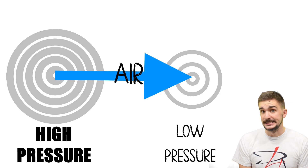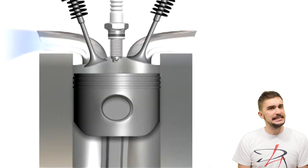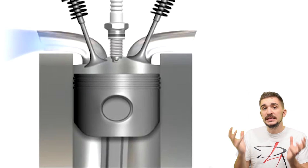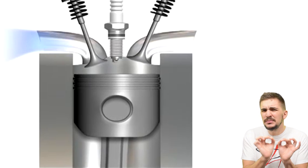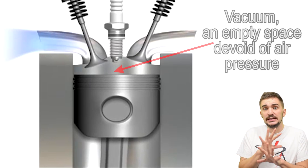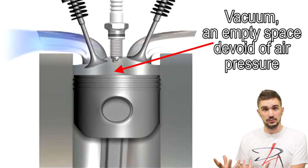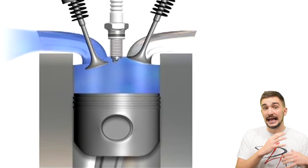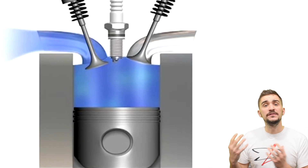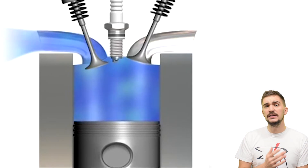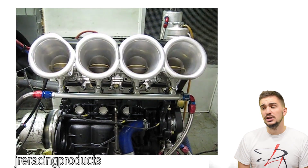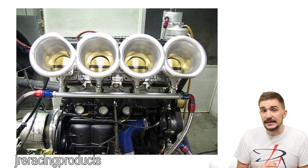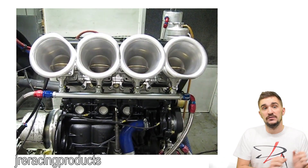Do you know what else works on a very similar principle to an isolation room inside a hospital? The cylinder inside your engine. When a piston moves very quickly down the bore inside your cylinder, it creates an empty space or a void, and for an extremely brief moment that empty space is actually devoid of air pressure — it's a vacuum, an absence of air pressure. Air flows from high to low pressure, which is why air from the outside quickly rushes in to fill the cylinder. This is why if you put your hand against the throttle body of a running engine you would feel air being sucked in — but the engine isn't really sucking air, it's simply air rushing in from a high pressure area.